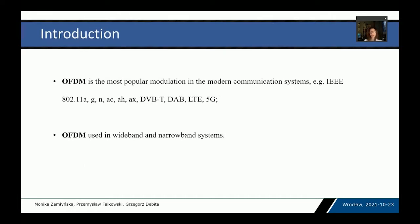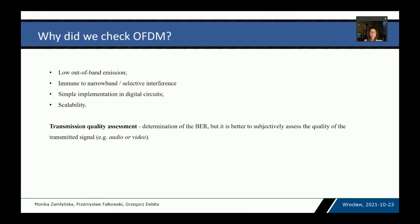What is OFDM modulation? OFDM is the most popular modulation used in modern communication systems. The academic definition says that modulation is a special preparation of data for transmission in the communication channel. OFDM has many advantages: low out-of-band emission, good immunity to narrowband and frequency-selective interferences, relatively simple implementation in digital circuits, and scalability. OFDM may be efficiently used in both narrowband, wideband, and even ultra-wideband systems.